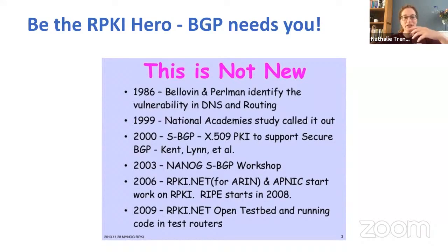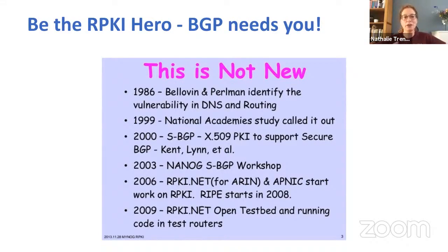In 2006, RPKI.net was a software tool that ARIN and APNIC, the Regional Internet Registries, started working on for RPKI. This is already over 12 years ago. For a long time, nothing really happened — it was just out there in theory. It is quite hard to define best practices based on just a theory, so actual implementations were needed for RPKI to mature.